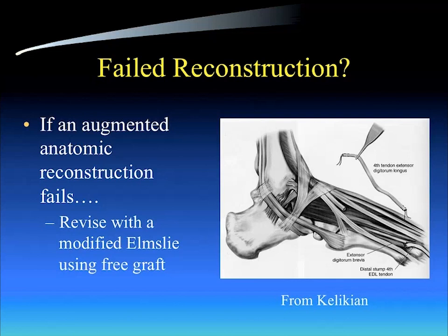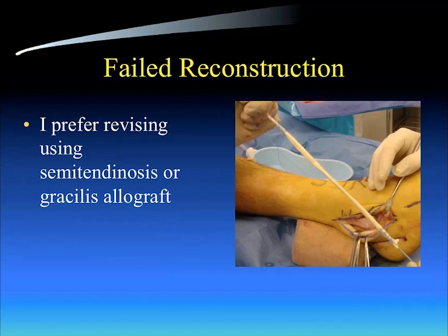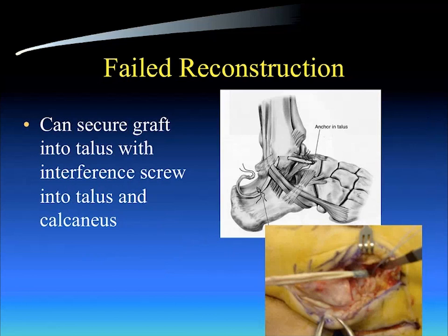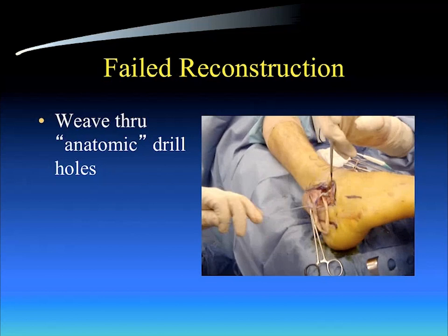Unfortunately, not all lateral ankle reconstructions are successful, even with the augmentation of the split brevis. What do I do if I have a failed reconstruction? I'll typically revise it with a modified Elmsley utilizing a free graft. I prefer utilizing a semitendinosus or gracilis tendon — preferably allograft so I don't create a harvest situation in the patient. We'll secure the graft into the talus with an interference screw, then drill holes through the fibula and through the calcaneus to set this tendon weave in place — a procedure popularized by Colville and Dr. Coughlin, which we've used quite successfully over many years.